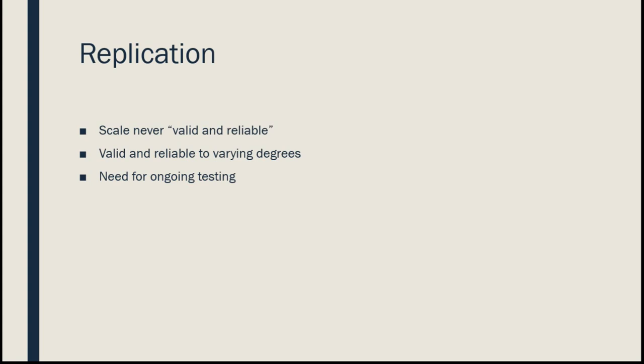Finally, we need to replicate. Testing the scale once doesn't make it permanently valid and reliable — we'd never say a scale is valid and reliable until the end of time. We say it's been valid and reliable in this administration. Before we can put a lot of trust in it, we need to test it a few more times. Validity and reliability vary from population to population and from administration to administration, so there's always a need for ongoing testing.